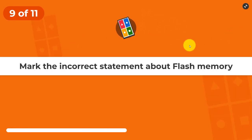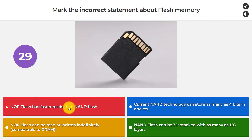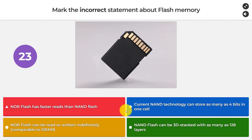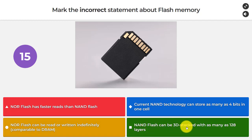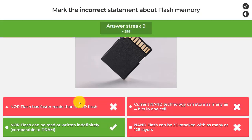Question number nine: mark the incorrect statement about flash memory. NOR flash has faster reads than NAND flash. Current NAND technology can store as many as four bits in one cell. NOR flash can be read or written indefinitely, comparable to DRAM. NAND flash can be 3D stacked with as many as 128 layers. The incorrect statement is that NOR flash can be read or written indefinitely comparable to DRAM.